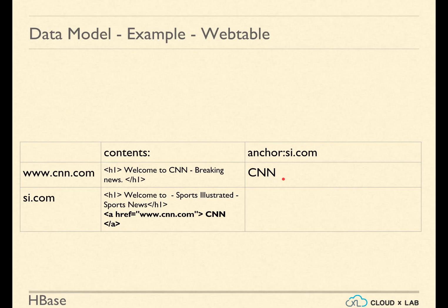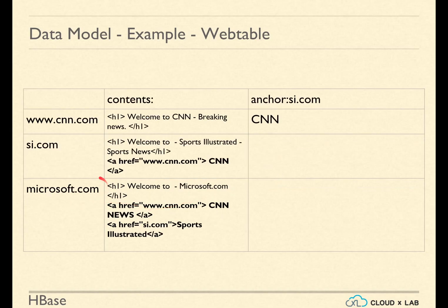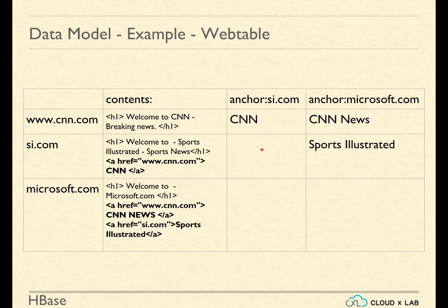After a while, the crawler stumbles upon microsoft.com, which also has an href to CNN.com. It adds a row for Microsoft and adds a column to the CNN.com row key and a column to si.com. This process continues. Notice that as more and more websites are crawled, rows as well as columns are increasing. Also notice that we are utilizing column headers to store data.